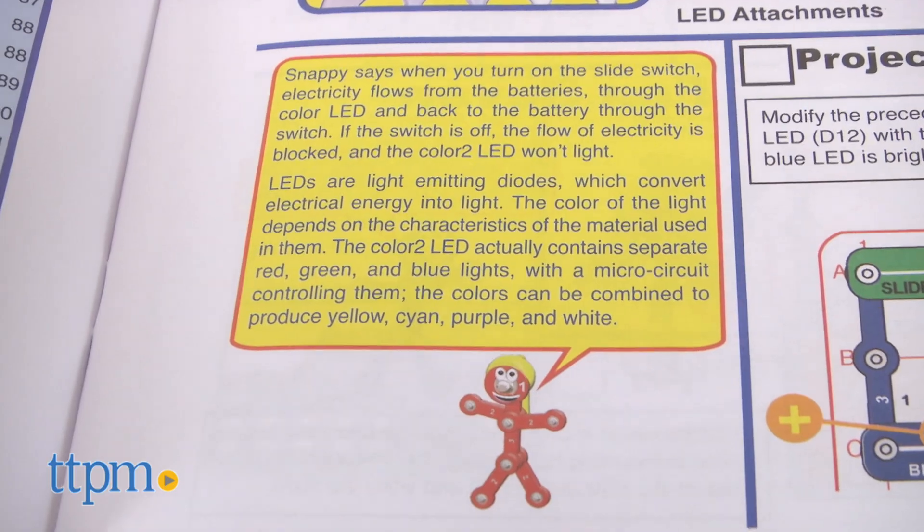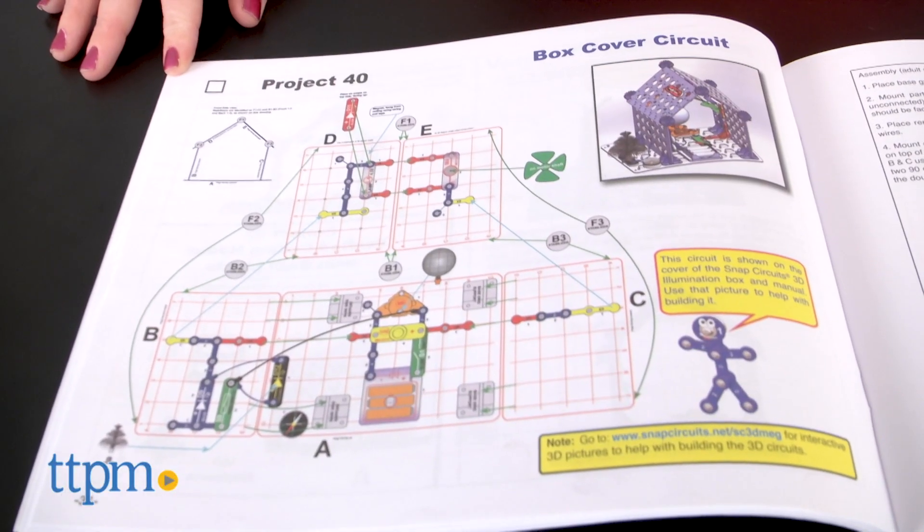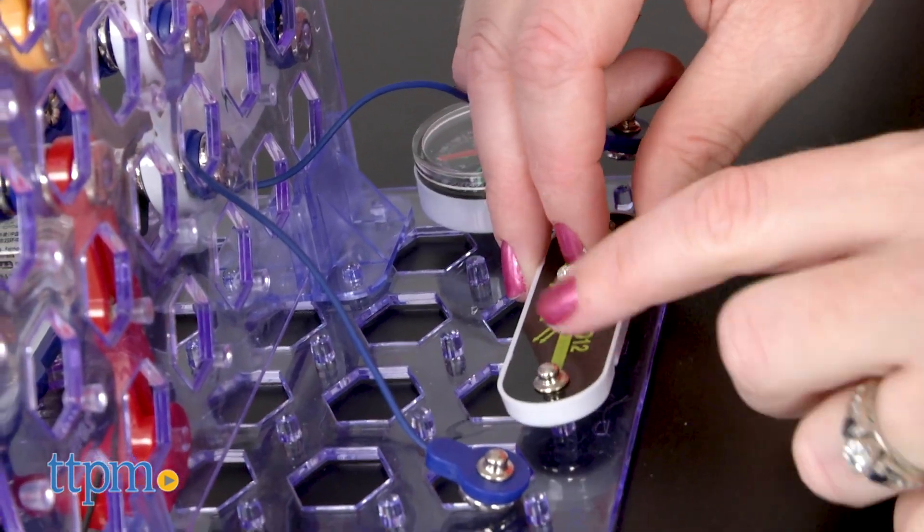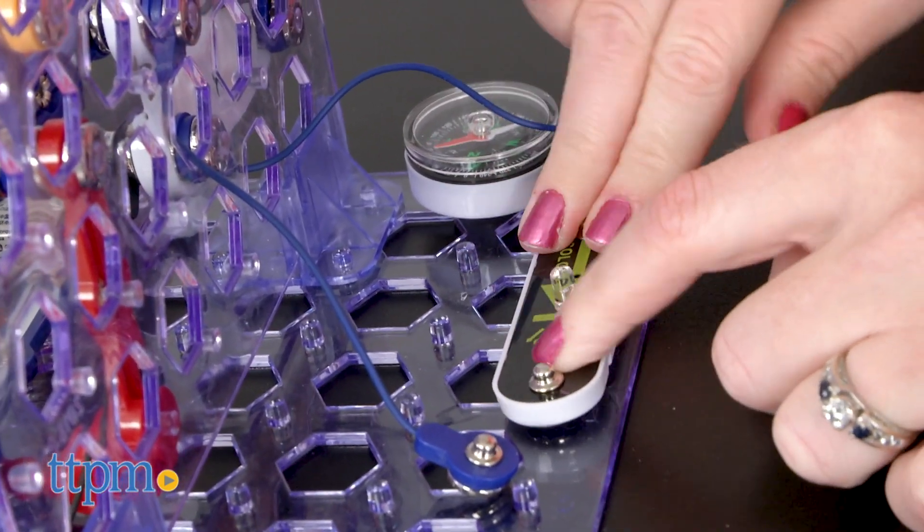A character named Snappy takes kids through the instructions and the pieces easily snap together. Plus kids can add the pieces in this set to those from other Snap Circuits kits for more building possibilities.